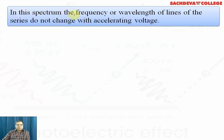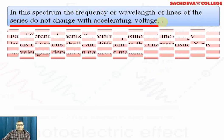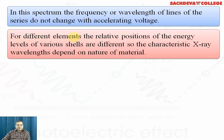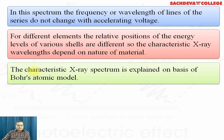In this spectrum, the frequency or wavelength of the lines of the series do not change with accelerating voltage. For different elements, the relative positions of energy levels of various shells are different. So the characteristic X-ray wavelengths depend on the nature of material. The characteristic X-ray spectrum is explained on the basis of Bohr's atomic model.